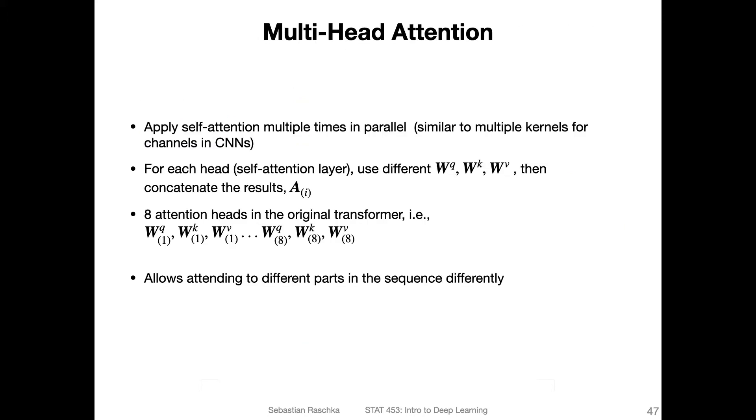To summarize, we are now going to apply self-attention multiple times in parallel, similar to how we use multiple kernels for the different channels in the CNNs. So remember, when we talked about CNNs, we had, for instance, an input image with three color channels, and we went from three channels to 64 channels, for example. So for that, we used 64 kernels in parallel.